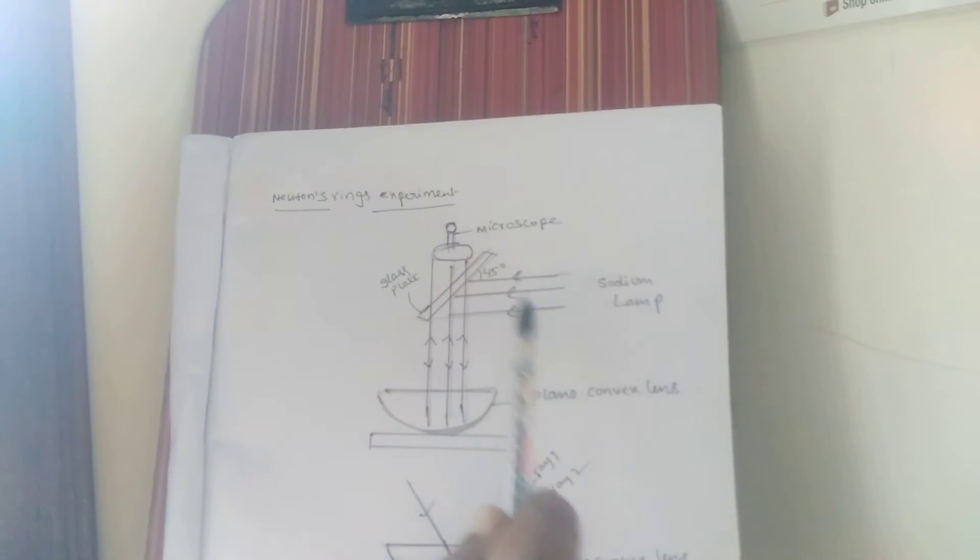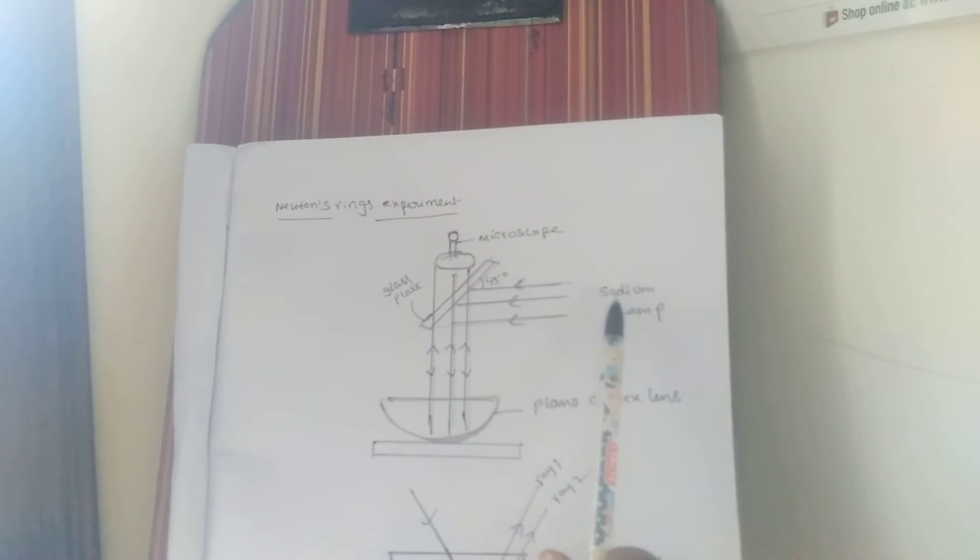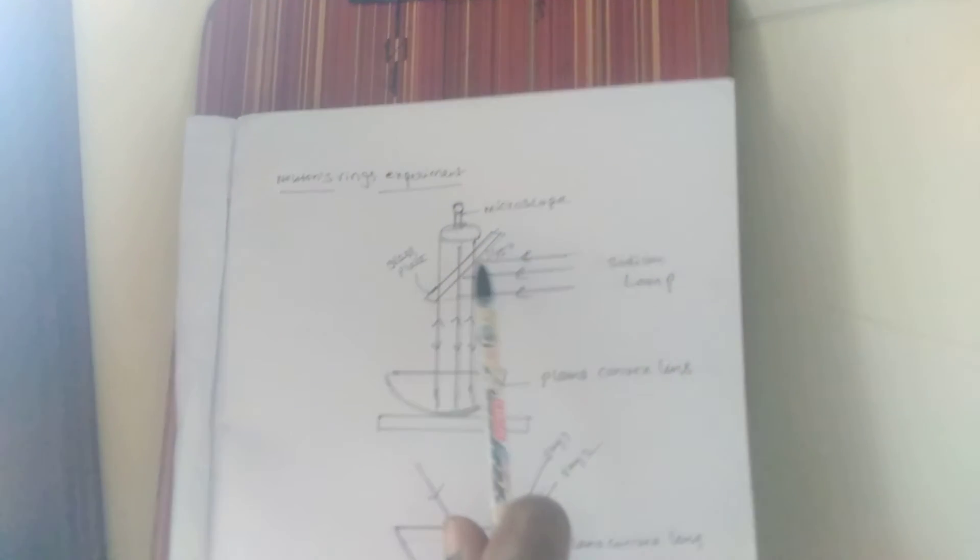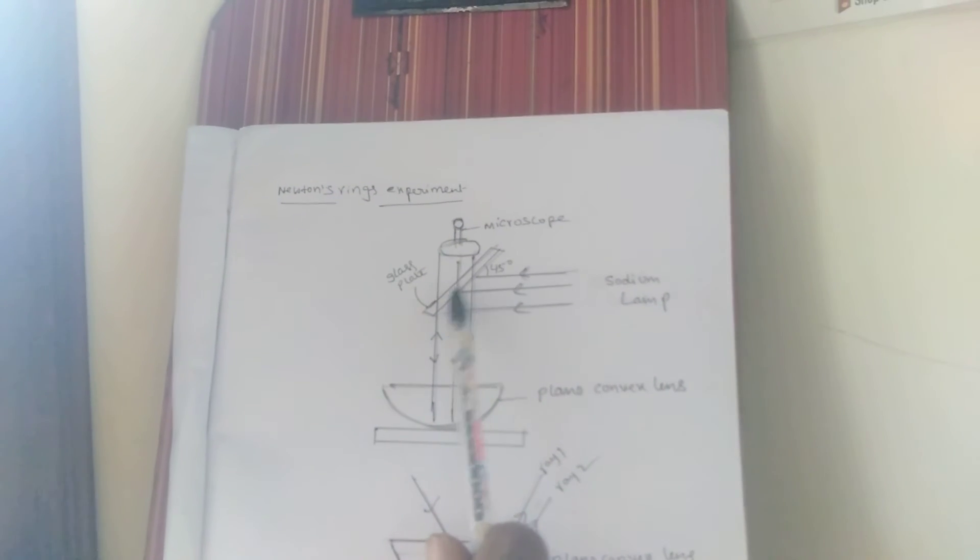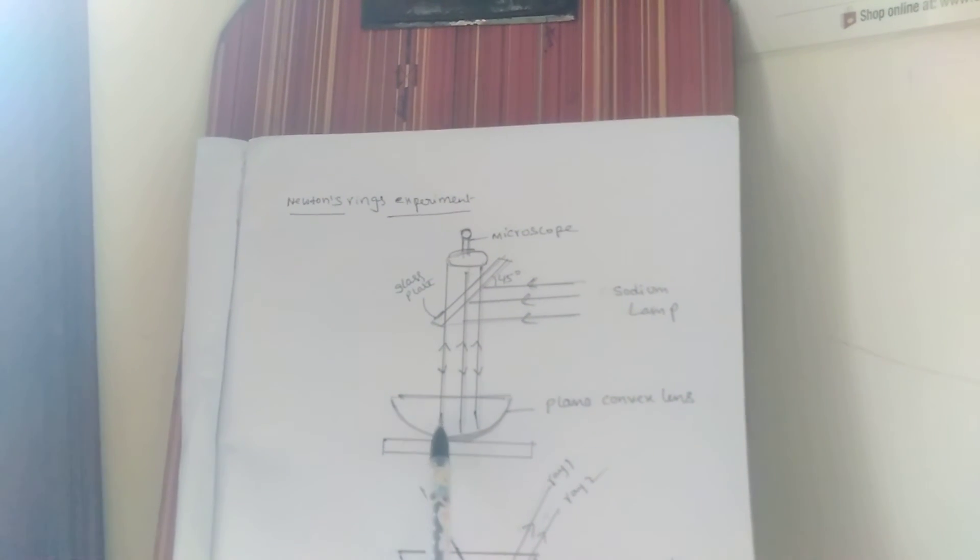This is the experimental procedure. Let us assume a monochromatic source of light which is normally incident on the vertical glass plate. From there, the light is reflected towards the air film which is enclosed by the lens and glass plate.